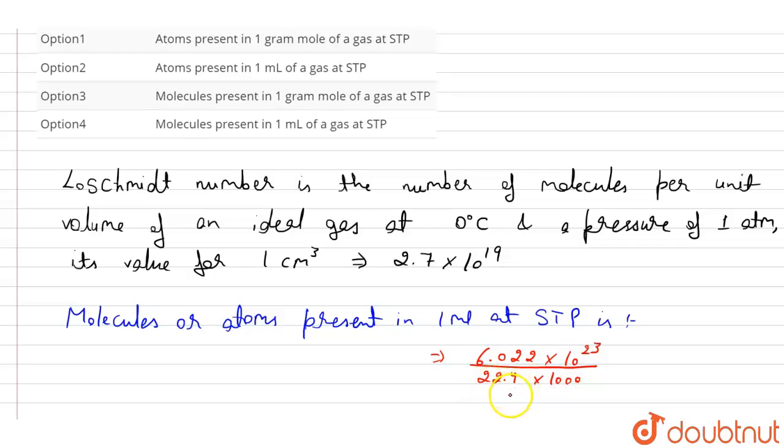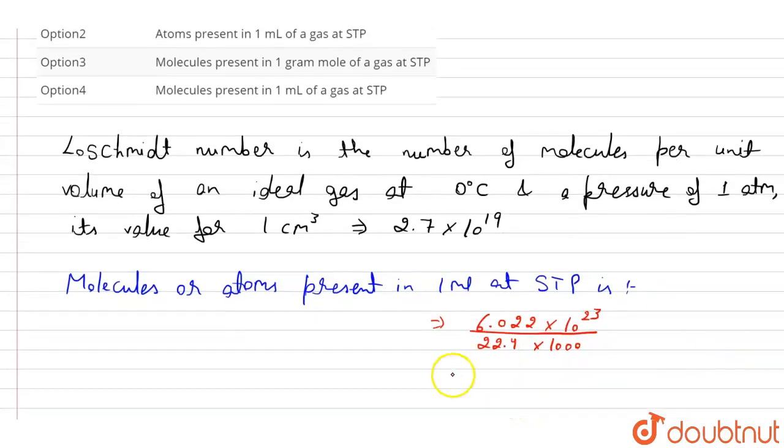This 22.4 liter is the volume occupied by one mole of a gas at STP. Now this value will be approximately 2.69 into 10 to the power 19, which equals 2.7 into 10 to the power 19.